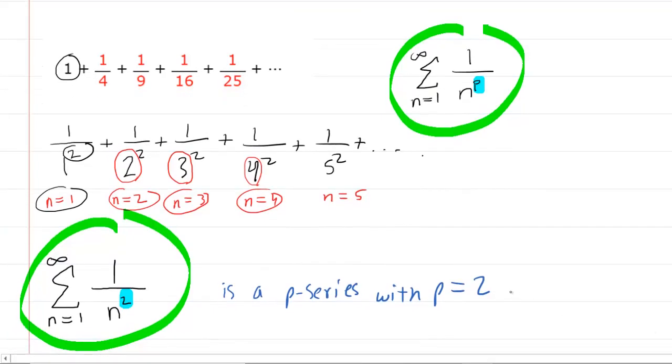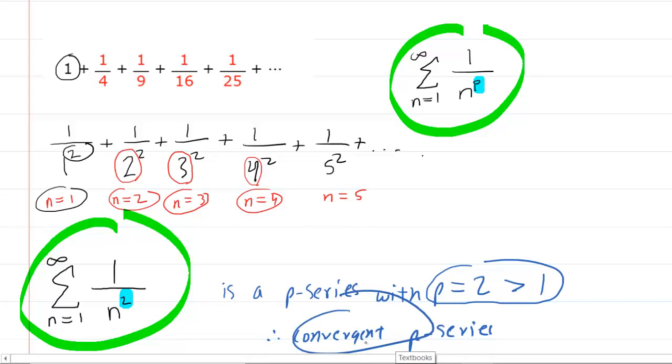Now, we remember that as long as our p-value is greater than 1, then we have a convergent p-series. If the value of p had been less than or equal to 1, then it would have been divergent. But as long as your p-value, which is 2 in this case, is greater than 1, then your p-series is convergent. So that would be the correct answer.